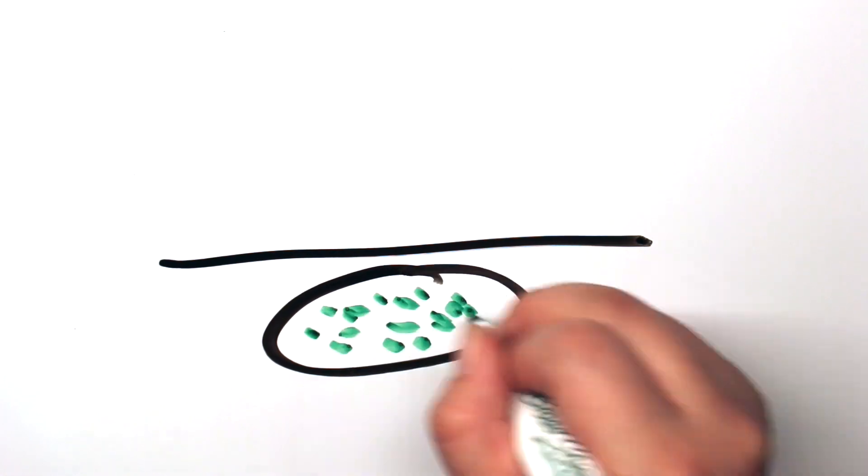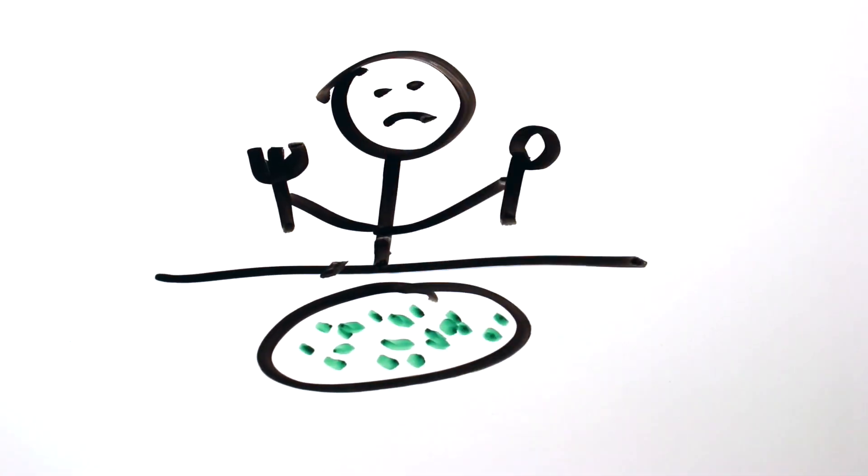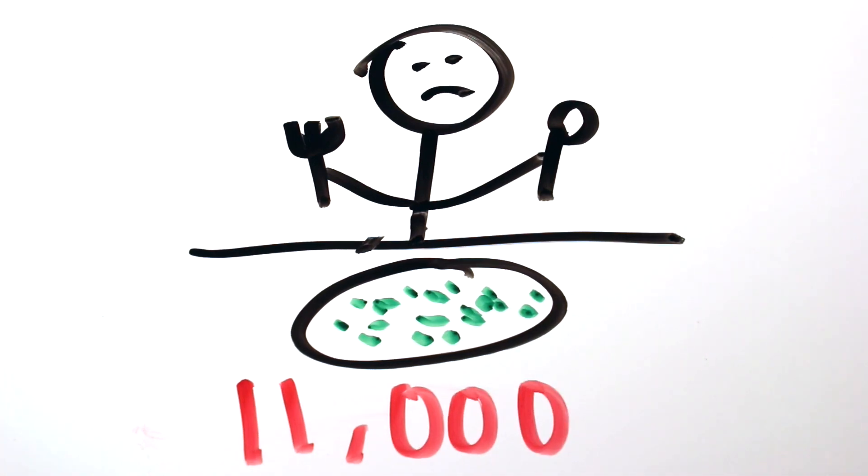Scientists at Ghent University in Belgium recently calculated people who eat seafood ingest up to 11,000 tiny pieces of plastic every year.